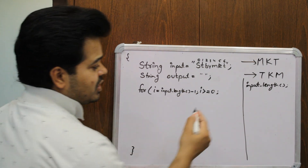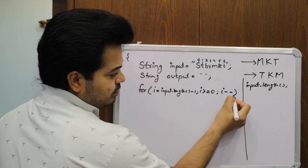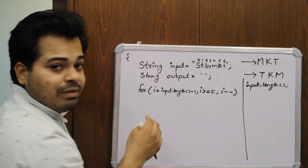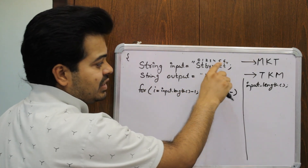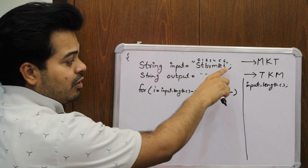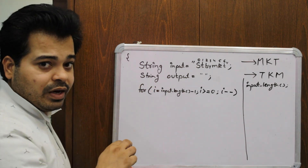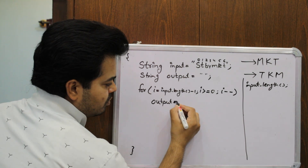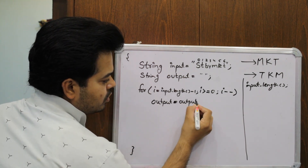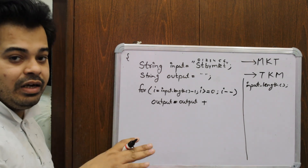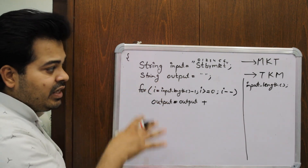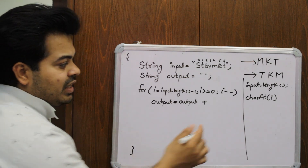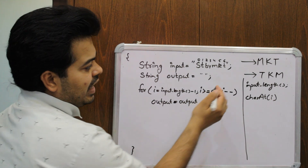If you have any doubt please let me know in the comment section. I'm using `i--` because I want to get the output from index 6 down to 0 — decrementing each time — because I'm going from back to front. So this is how your for loop looks. Inside the loop, your output should equal output plus — and now we use the second string function — which is called `charAt(i)`.